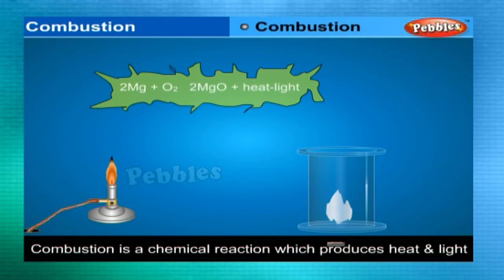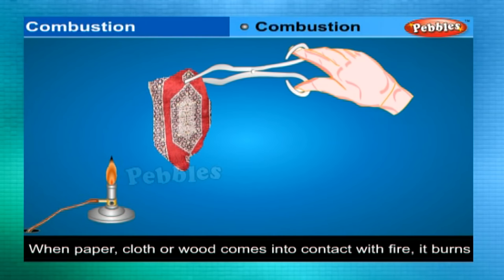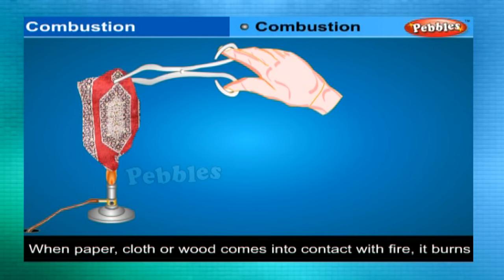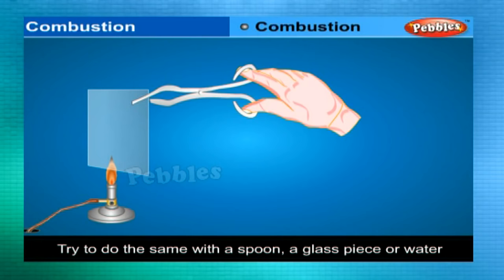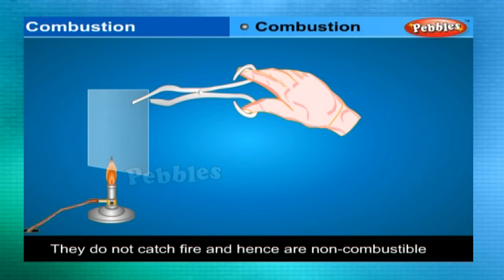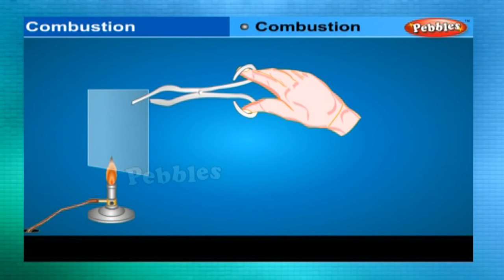Combustible substances: when paper, cloth, or wood comes into contact with fire, it burns — they are combustible. Try to do the same with a spoon, a glass piece, or water — they do not catch fire and hence are non-combustible. Substances which burn when brought into contact with fire are called combustible substances, and those which do not burn are said to be non-combustible.